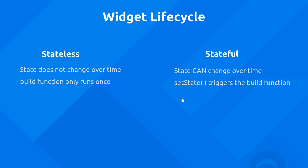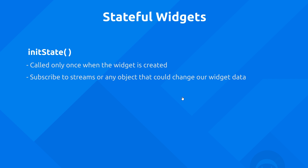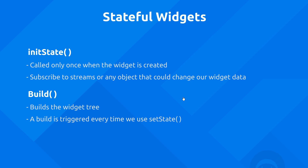Let me show you a couple of those lifecycle methods now. First we have the initState method — that's the first method called once our state object has been created. It's only called once when the widget is first created, and it's a good place to subscribe to streams or any object that's going to change our widget data in the future. After that we have the build function, which builds the widget tree and runs quite a lot because it's triggered every time we use setState. Finally we have the dispose method, which is triggered when the widget or state object is completely removed.